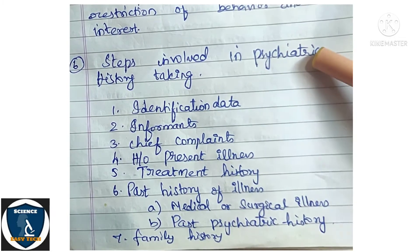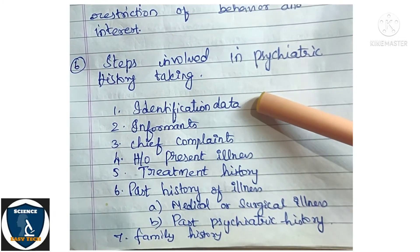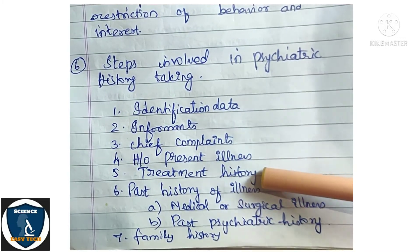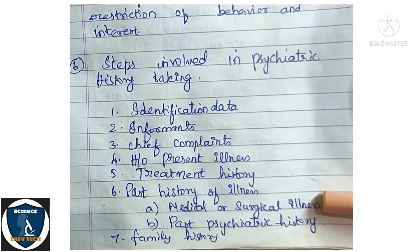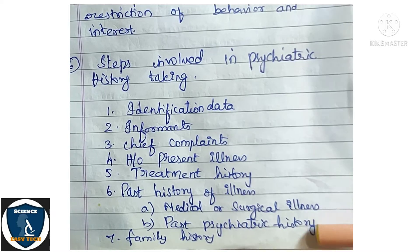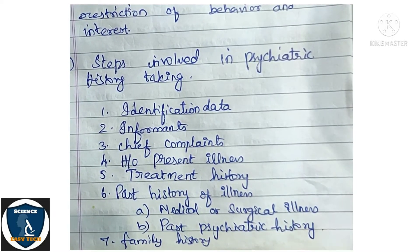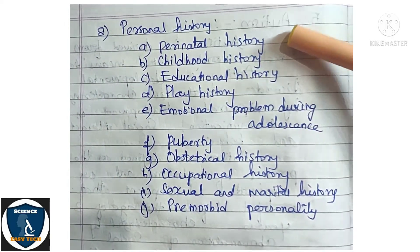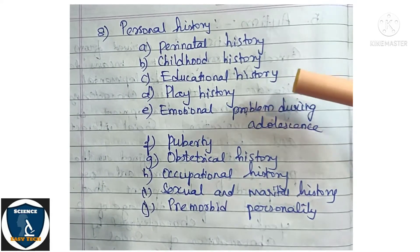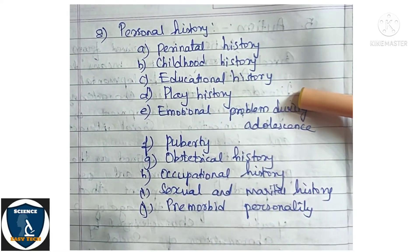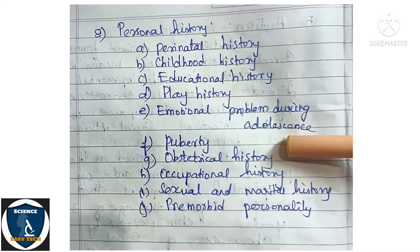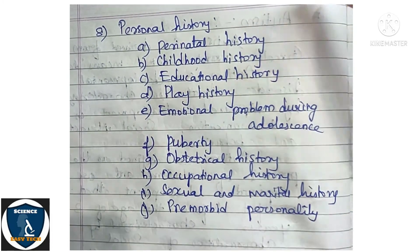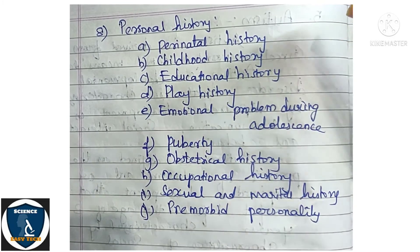Sixth question: Steps in psychiatric history taking. These include identification data, informant, chief complaint, history of present illness, treatment history, past history of illness (medical or surgical), past psychiatric history, family history, and personal history. Under personal history: perinatal history, childhood history, educational history, play history, emotional problems during adolescence and puberty, obstetrical history, occupational history, sexual and marital history, and pre-morbid personality.